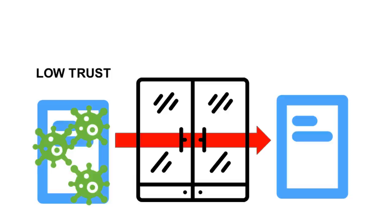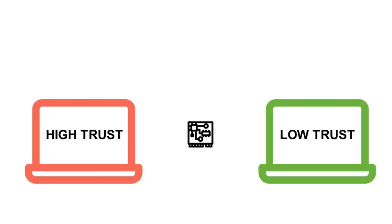You can pass stuff from a domain of low trust to a domain of high trust, sanitizing the information as you go. You can even pass information from a domain of high trust to a domain of low trust, stripping out sensitive information as you move it across the barrier.